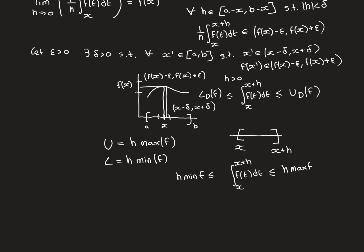Next, we divide through by h — or multiply by its multiplicative inverse. Since h is greater than zero in this first part, one over h is also greater than zero, so we can multiply everything by one over h without changing the signs of the inequalities. This gives us that one over h times the integral — which is our overall function — is sandwiched between the minimum value the function obtains and the maximum value the function obtains.